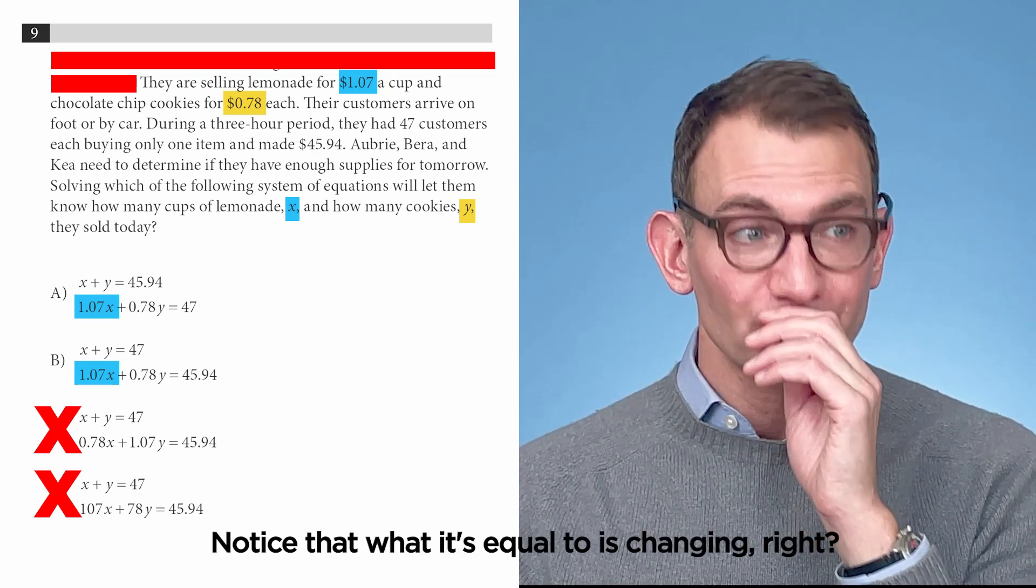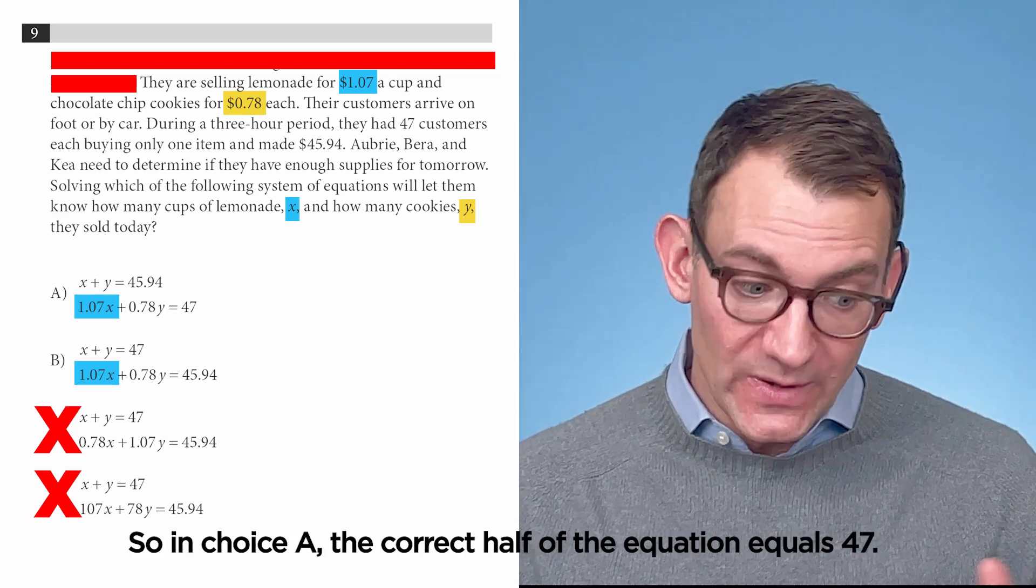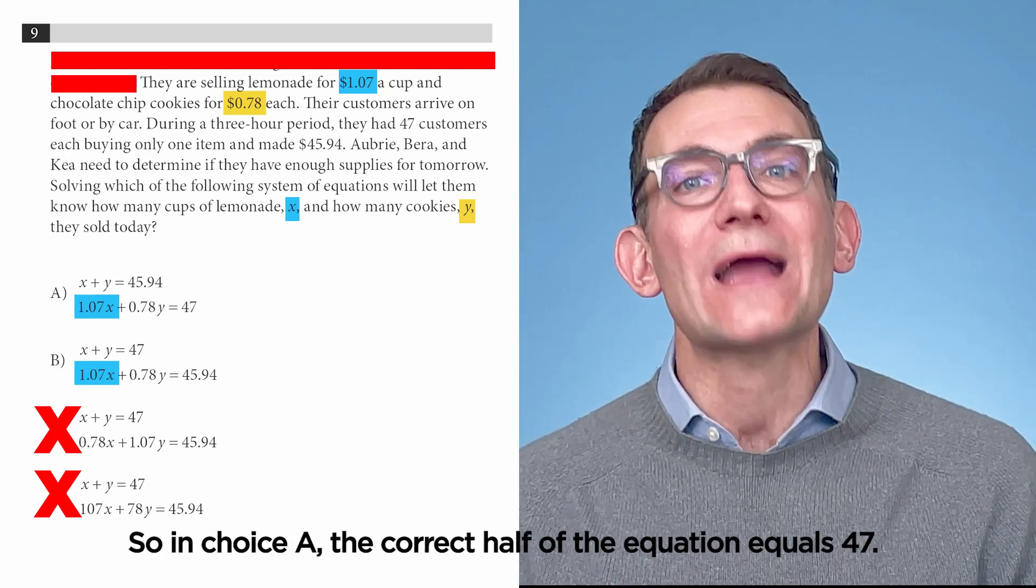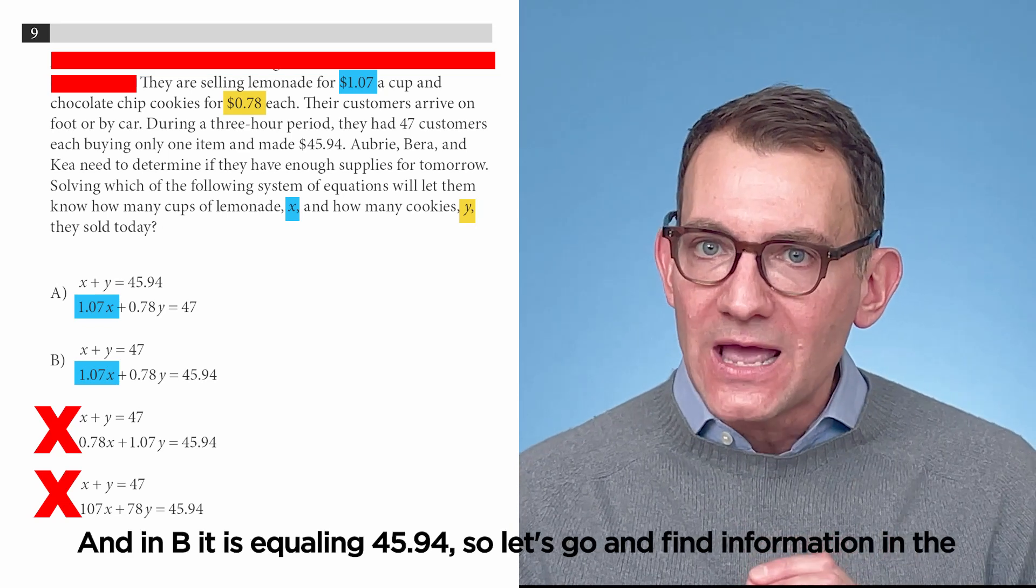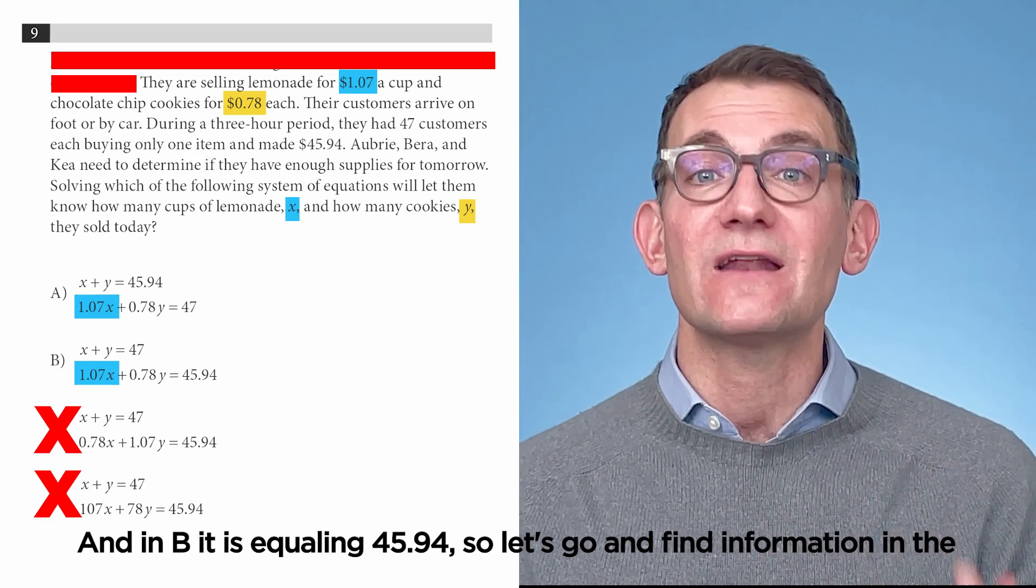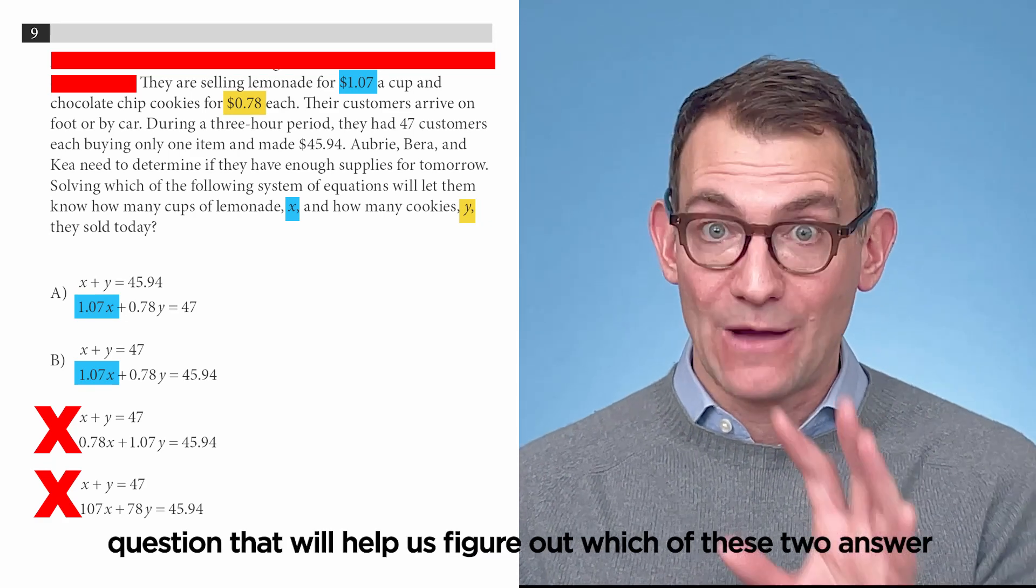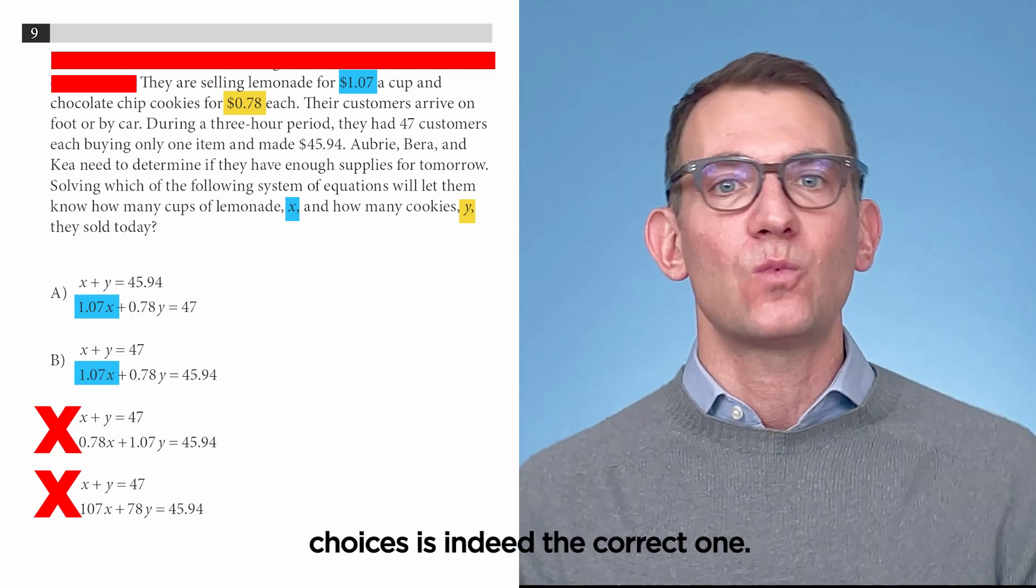And here again, we can use the answers to help us out. Notice that what it's equal to is changing. So, in choice A, the correct half of the equation equals 47, and in B, it is equaling 45.94. So, let's go and find information in the question that will help us figure out which of these two answer choices is indeed the correct one.